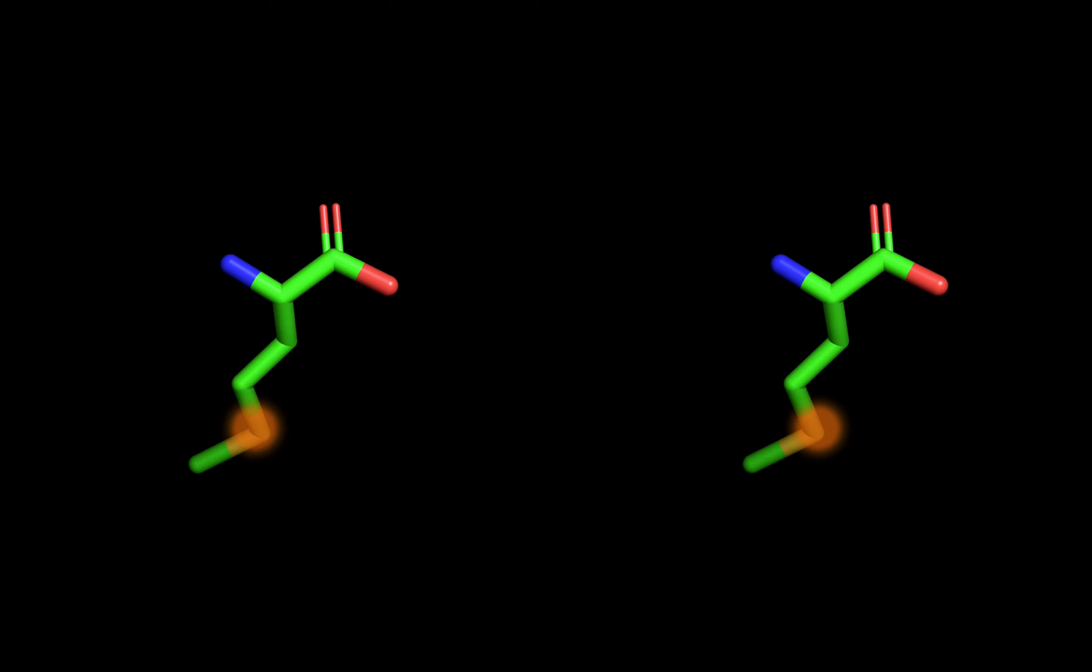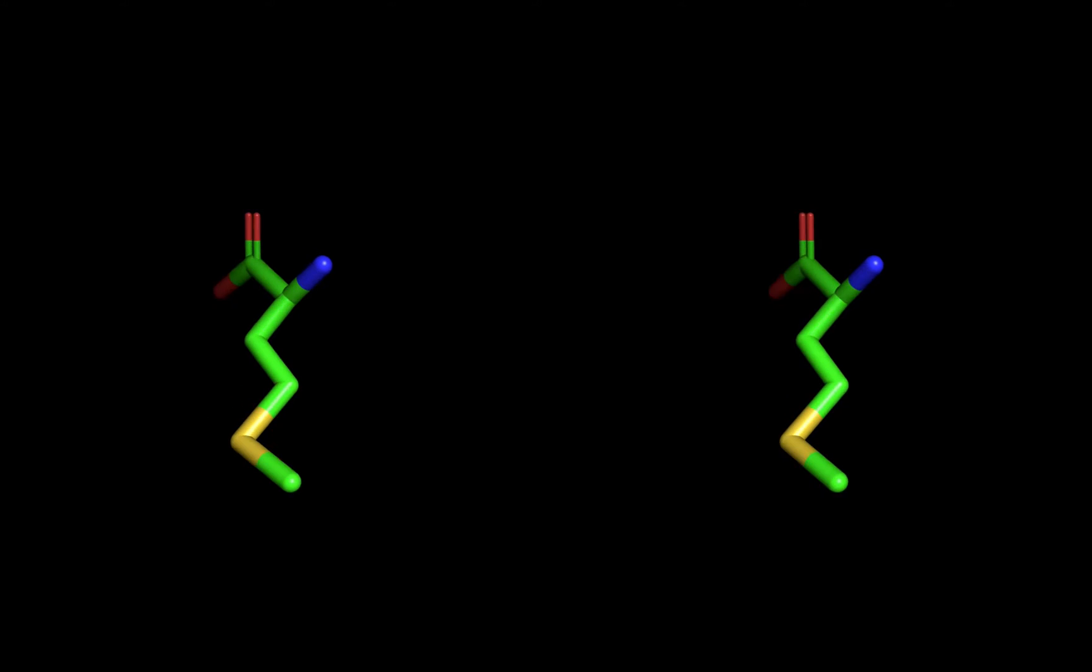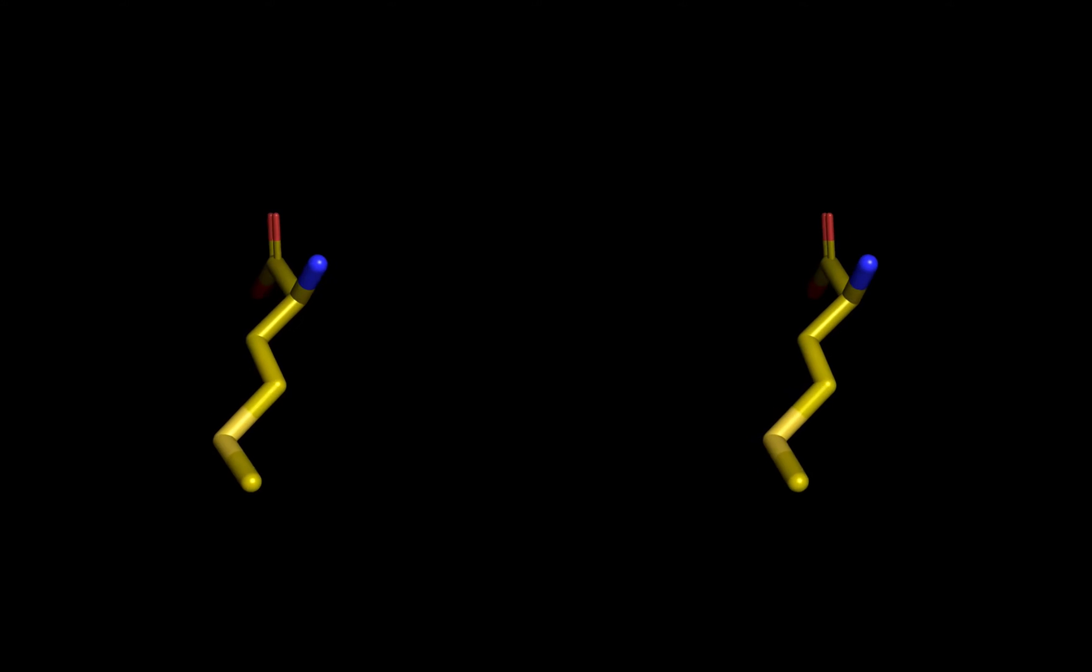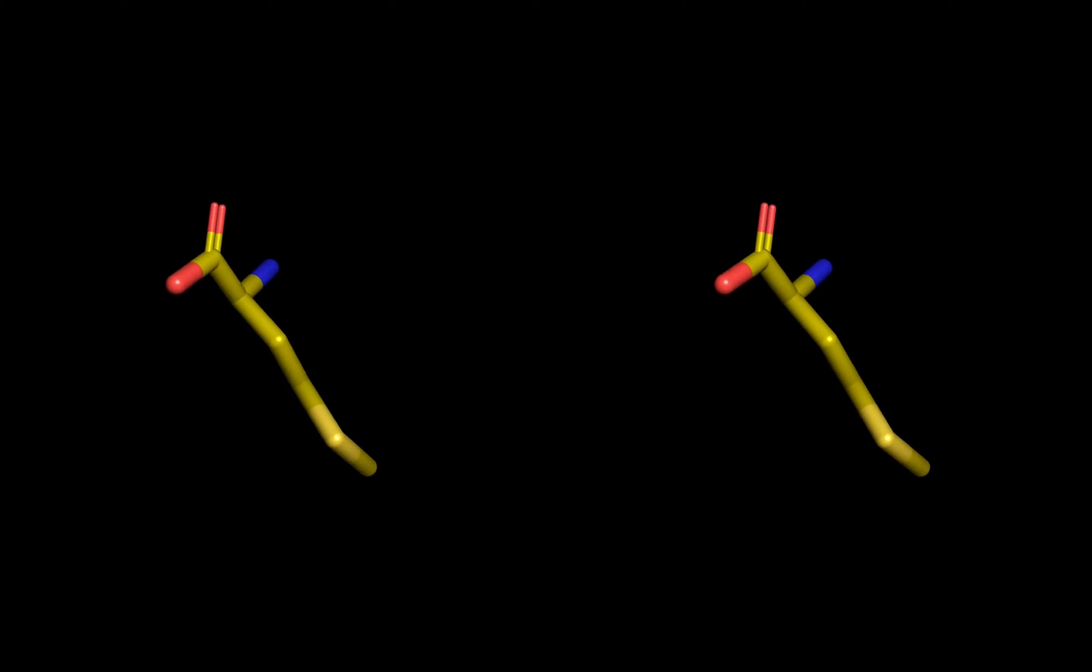Sulfur is another element found in amino acids like methionine here. And its CPK color is yellow. So you probably want to avoid that color for backbone carbon atoms as well.